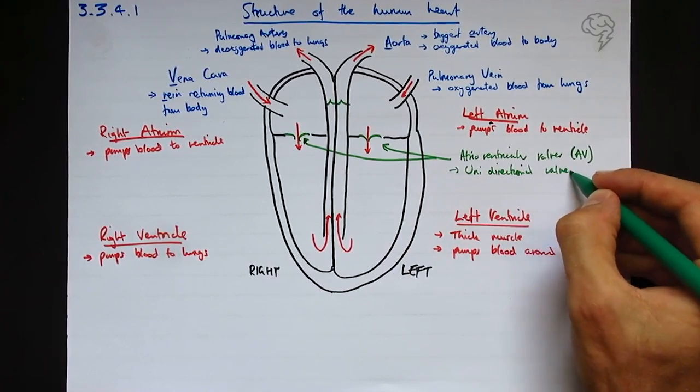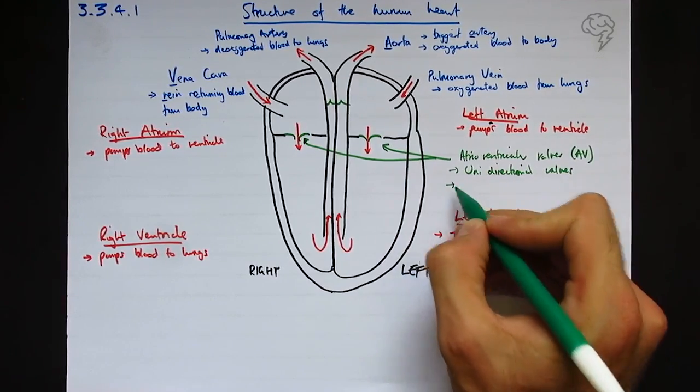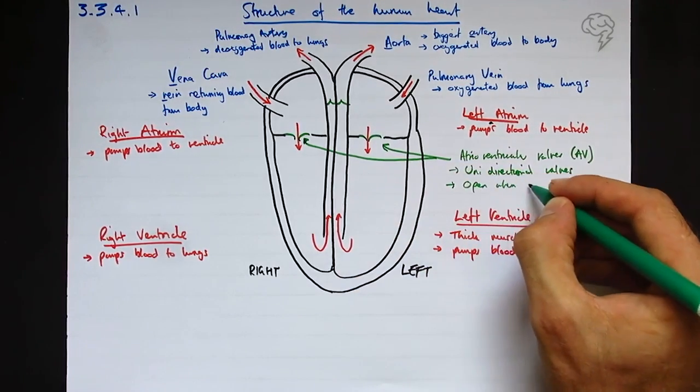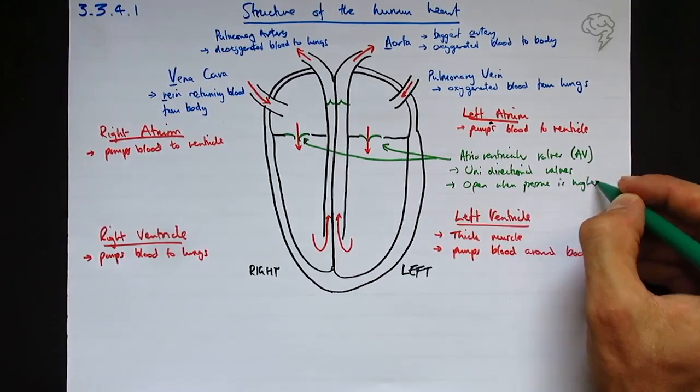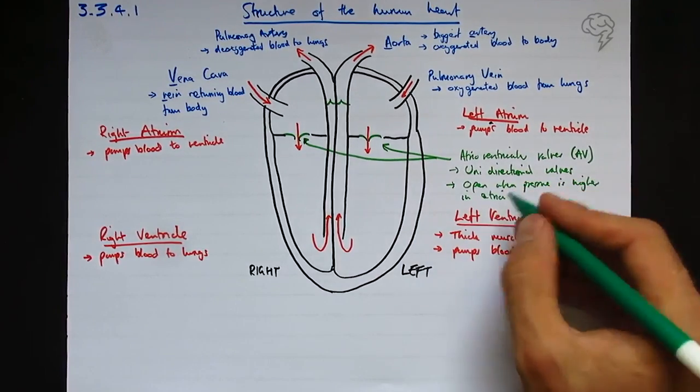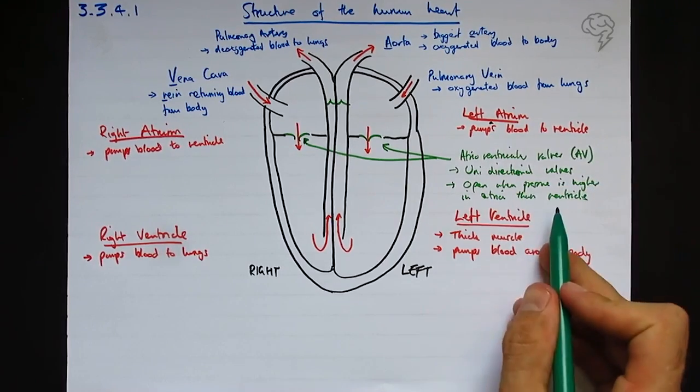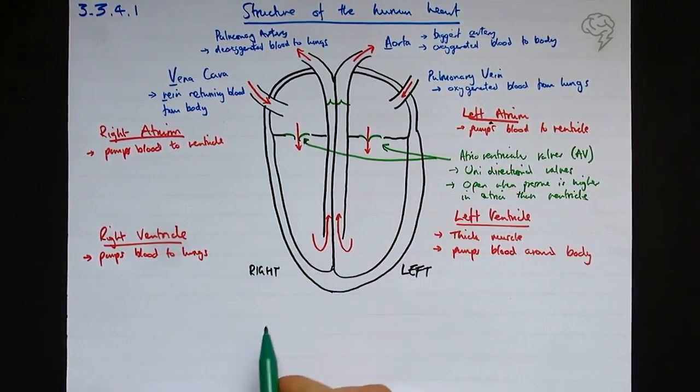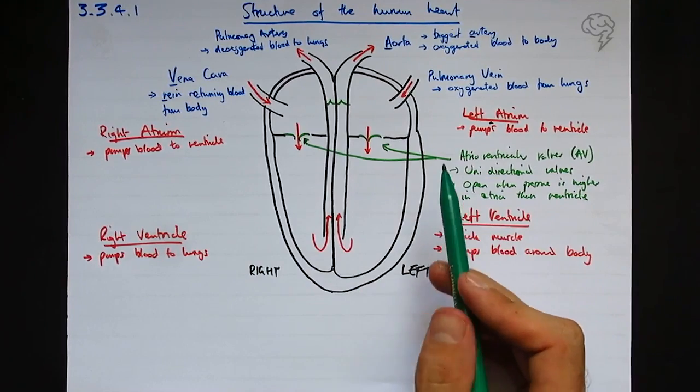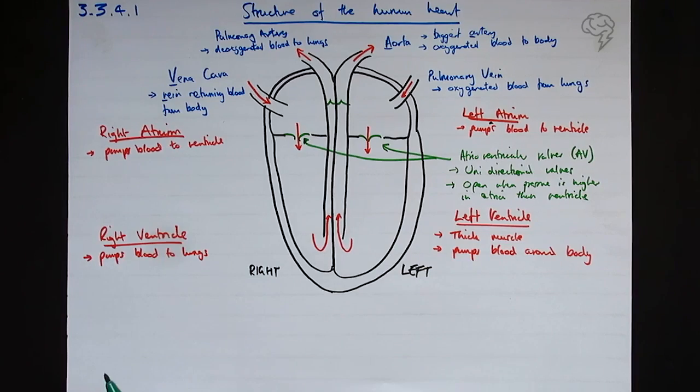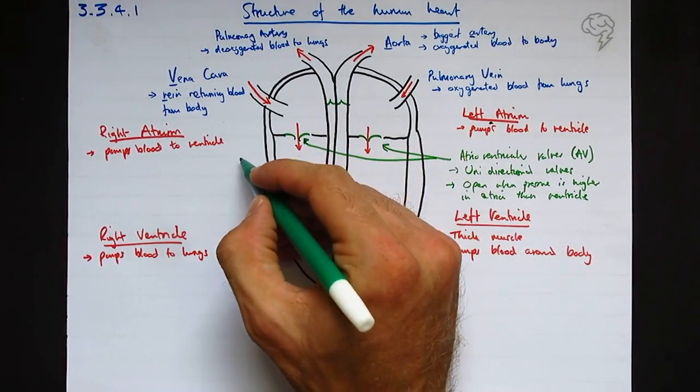They're unidirectional valves - that just means they're one way. When do they open? They open when the pressure is higher here than the pressure is here. So that's atria plural because I'm talking about both at the same time, and the ventricles. When is the pressure higher in the atria than the ventricles? Well, when the atria are contracting, which we can say systole - the atrial atria systole - and the ventricles are relaxing or ventricular diastole. But those words are not that essential for getting the grades.